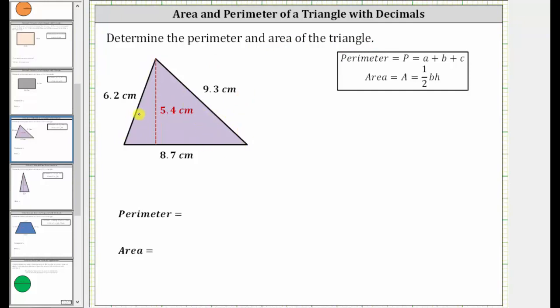So if we think about walking around the triangle starting here, the perimeter is 6.2 centimeters plus 9.3 centimeters plus 8.7 centimeters. So again, the perimeter P is equal to 6.2 plus 9.3 plus 8.7.